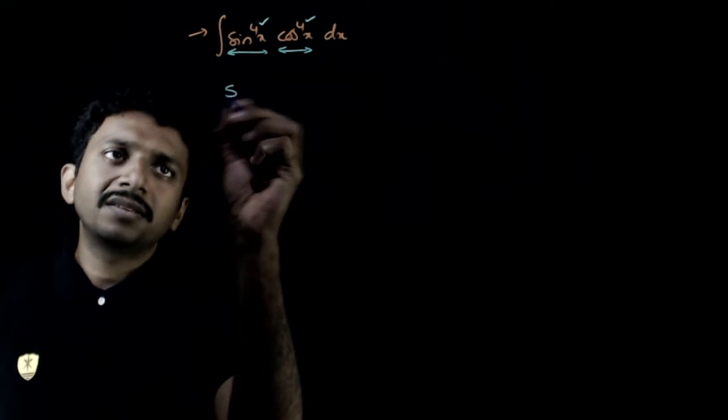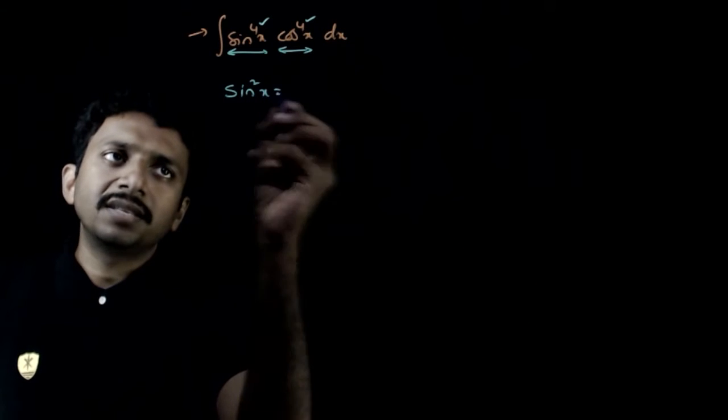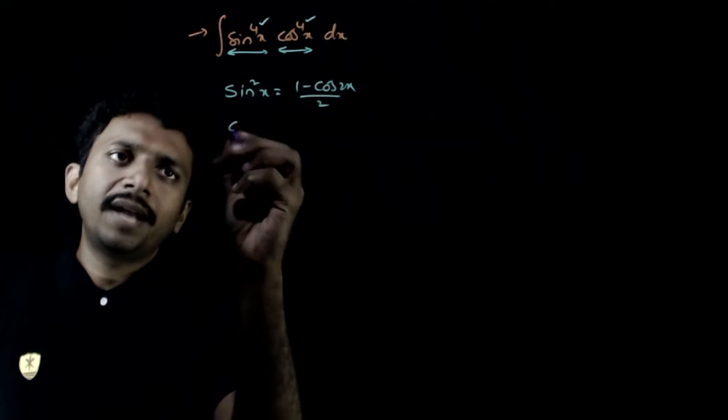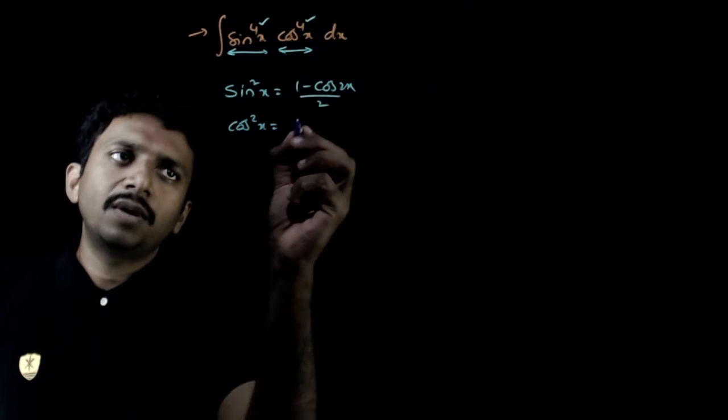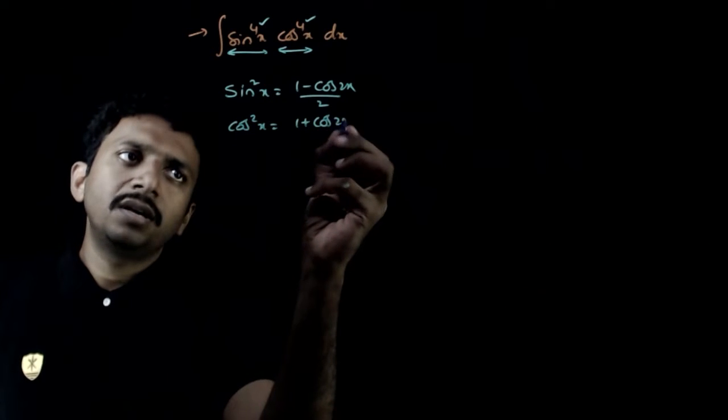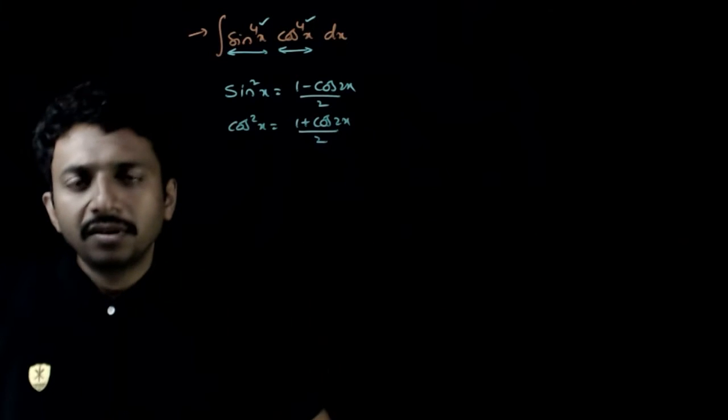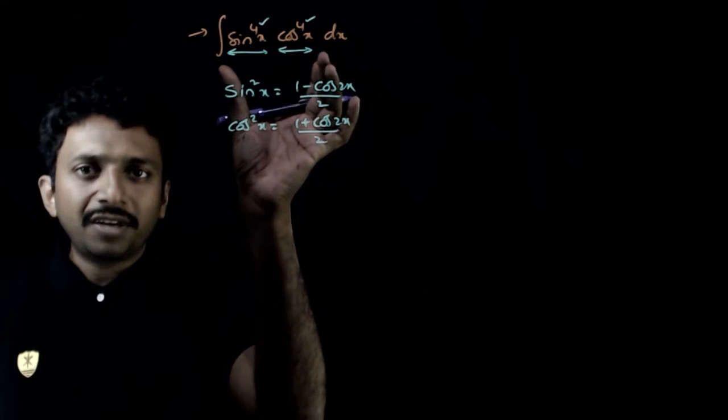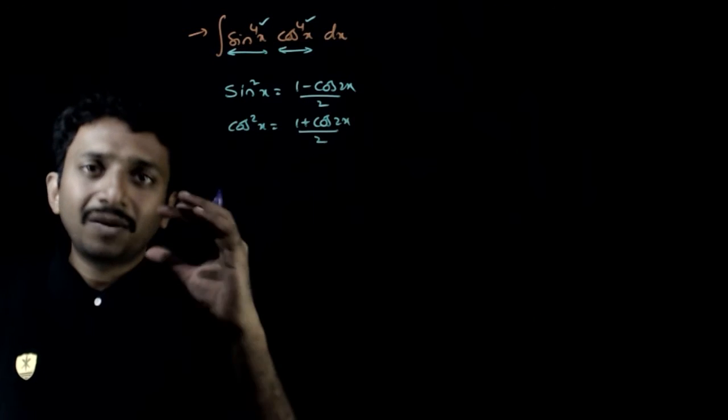So using the formulas, sin square x is equal to 1 minus cos 2x by 2 and cos square x is equal to 1 plus cos 2x by 2. So use these formulas to simplify the given function. But before doing that,